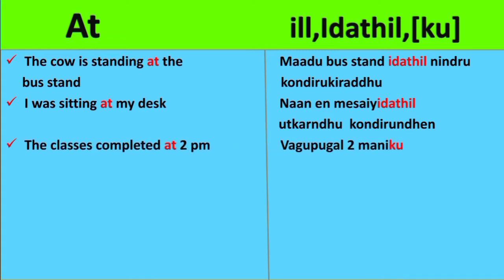The third example is: 'The class is completed at 2 pm.' Here we are specifying a specific time, so we are using 'ku' in Tamil. We will say: Vaguppugal irandu manikku mudi vadaindudu. Vaguppugal means the classes, irandu manikku means 'at 2 pm', and mudi vadaindudu means 'completed'.